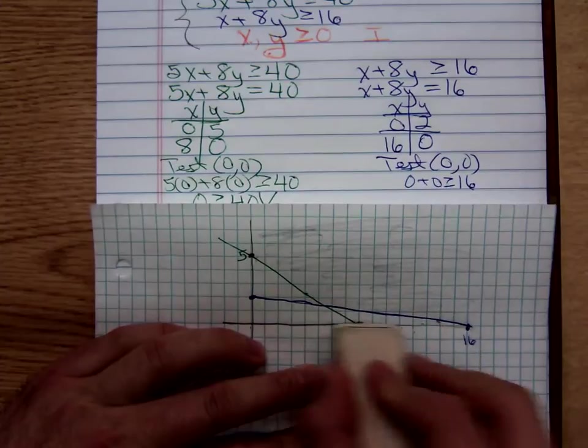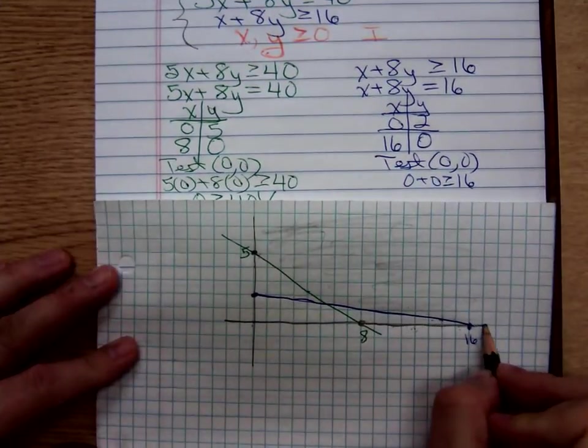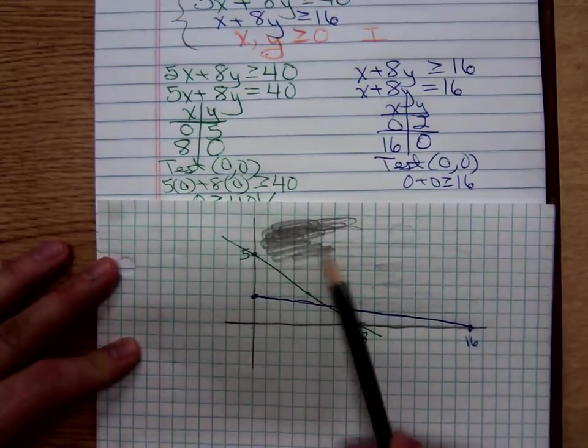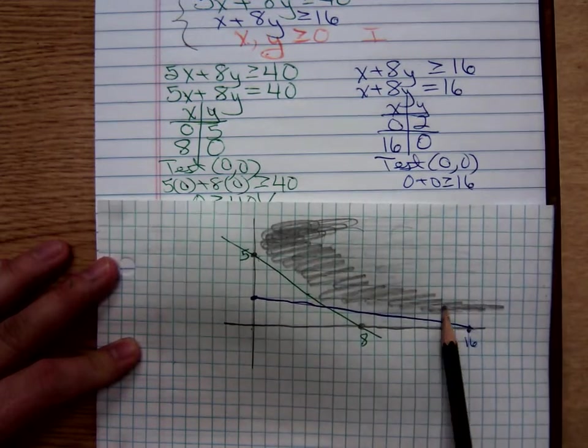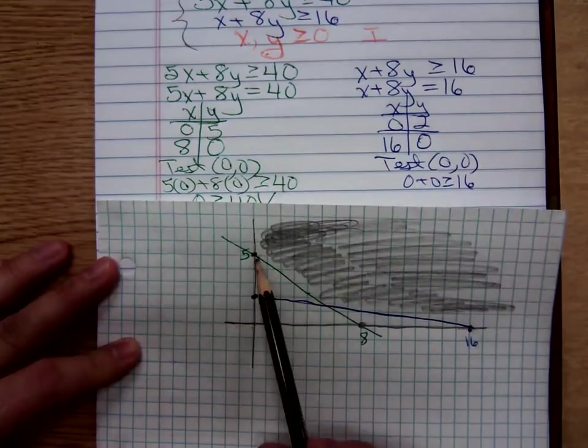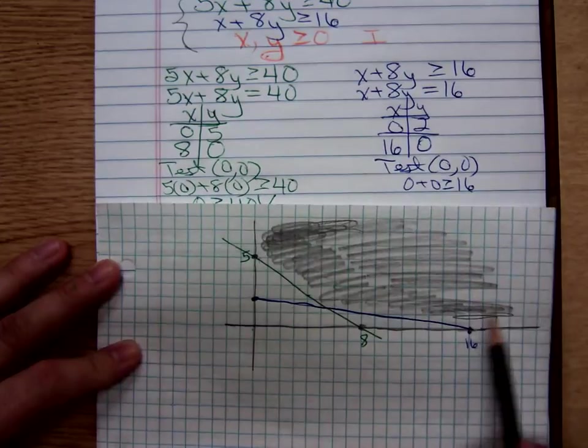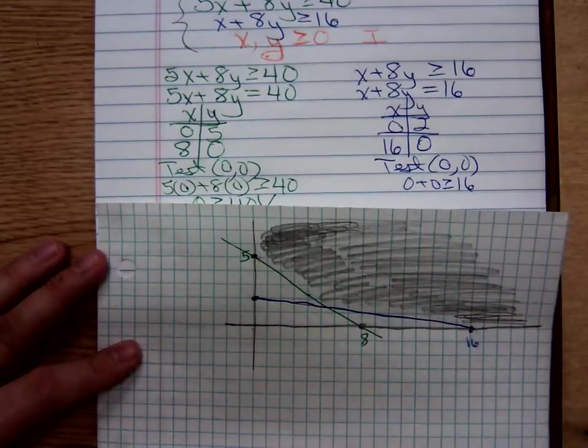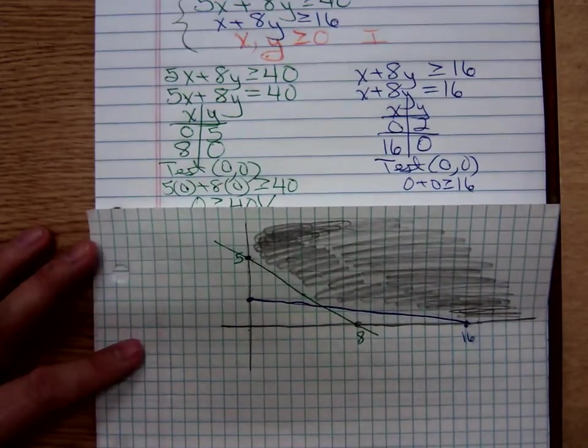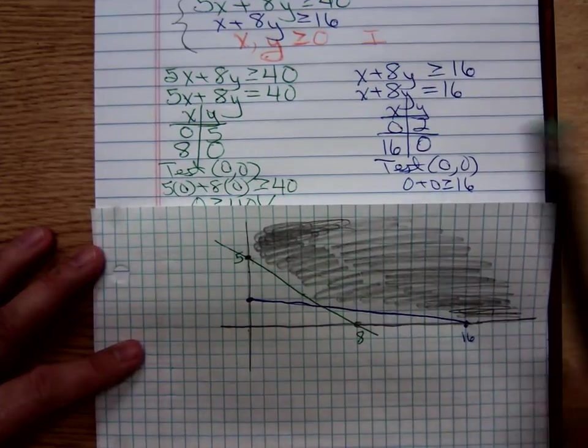Our feasible region. The region that gets shaded both times is this unbounded region bounded by the y-axis, the green line segment, the blue line segment, and the x-axis. This is an unbounded feasible region. For an unbounded feasible region, either a maximum or minimum value will exist, but not both. Only one of them is going to occur at the corner points.